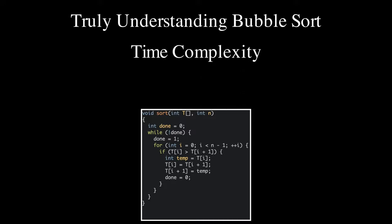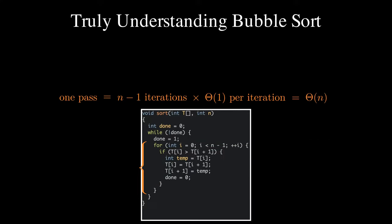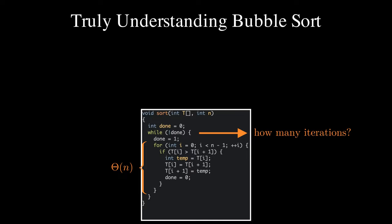Let us now understand the time complexity of bubble sort. Each pass makes n minus one iterations, with each iteration taking constant time. Therefore a pass takes time theta of n. To find the time complexity of the algorithm, it remains to count the number of passes, which is the same as the number of iterations of the while loop.